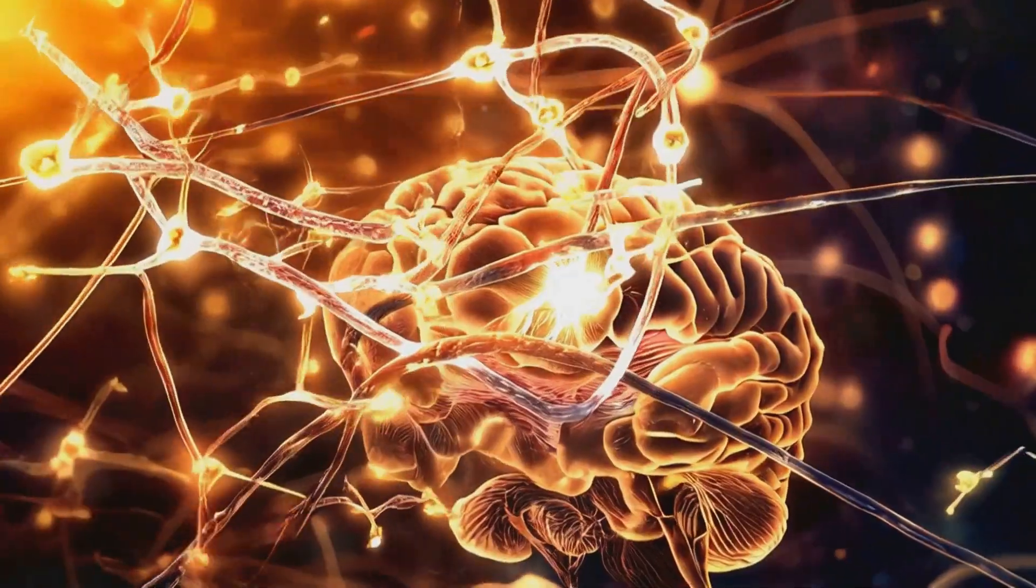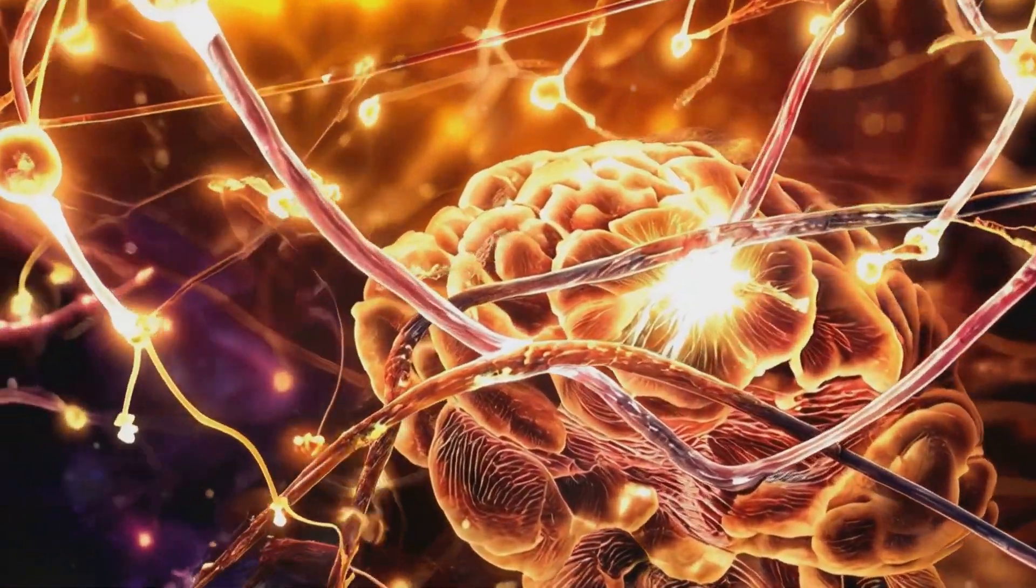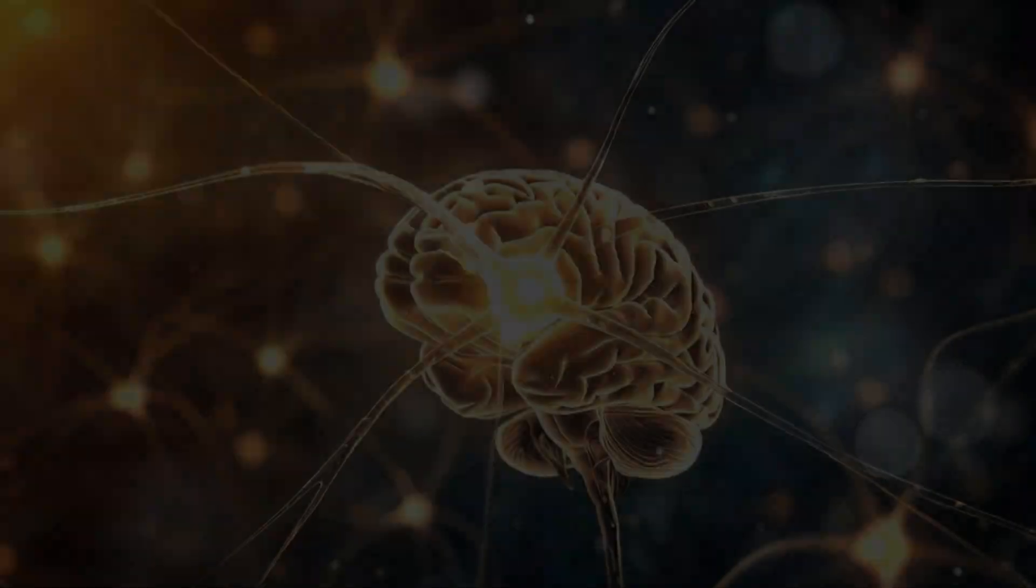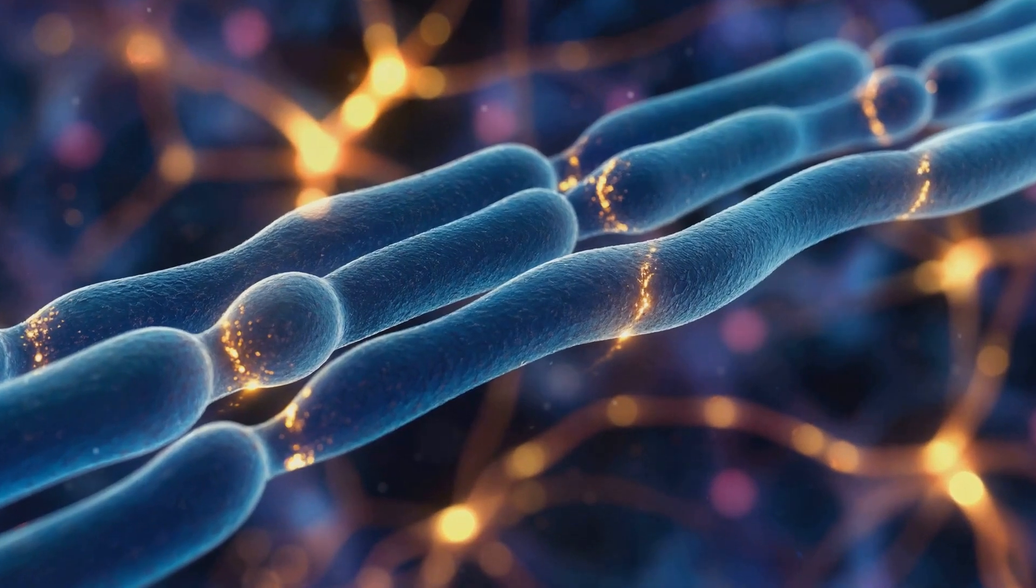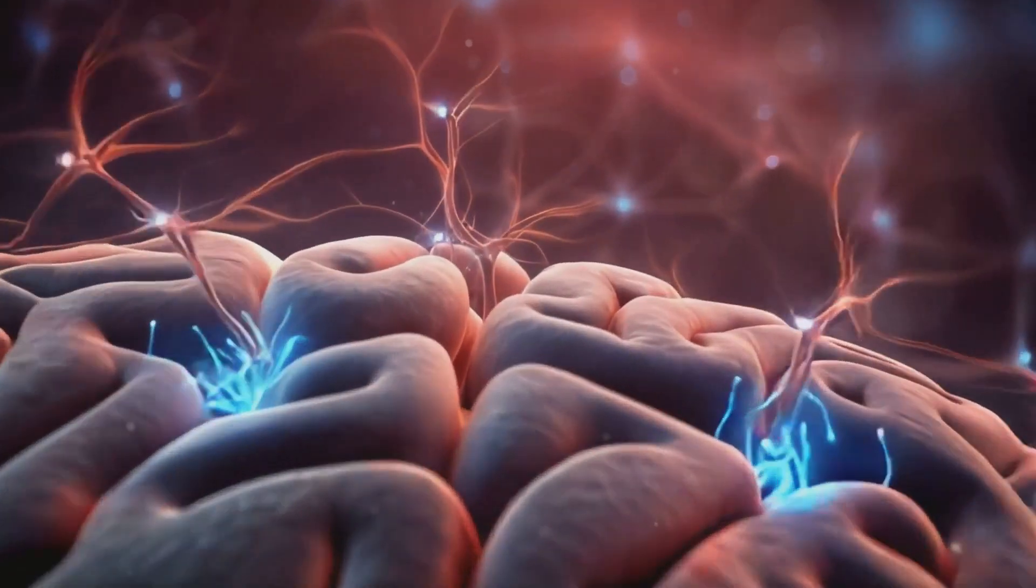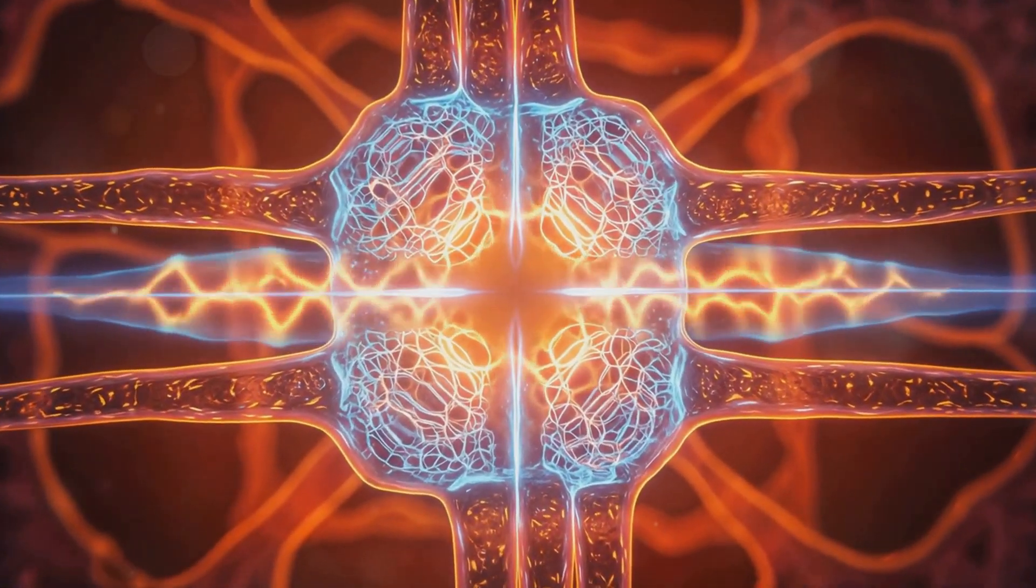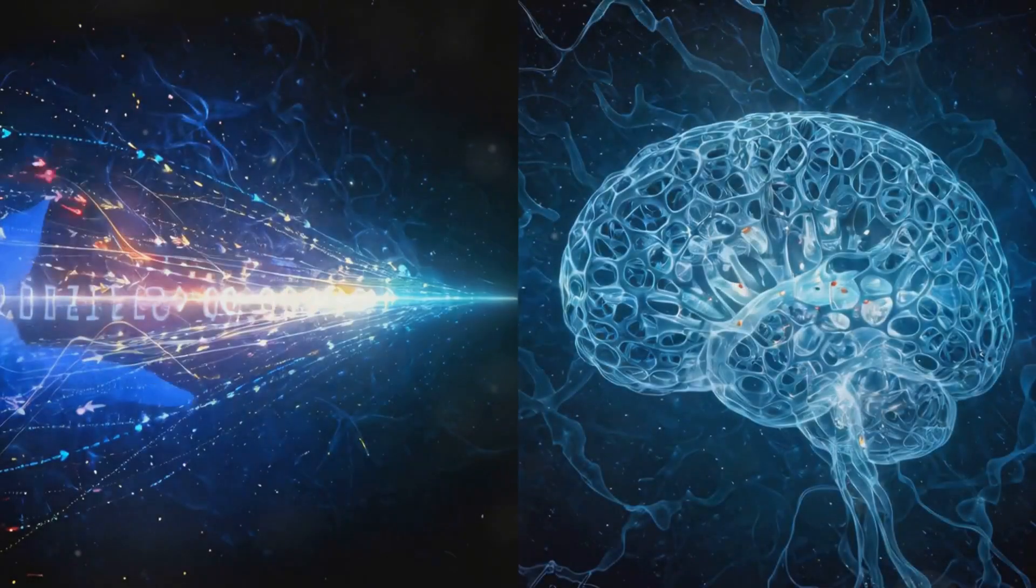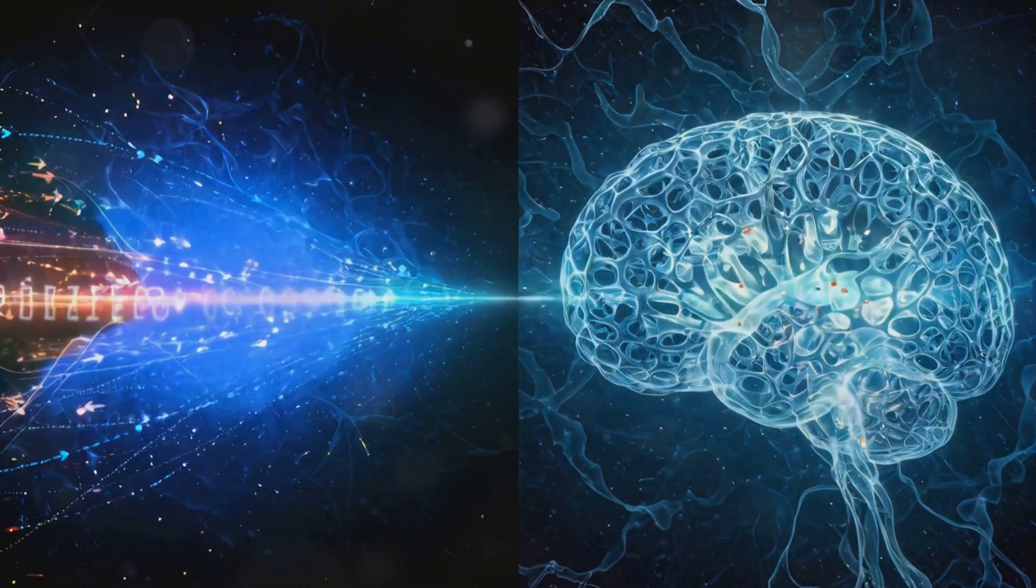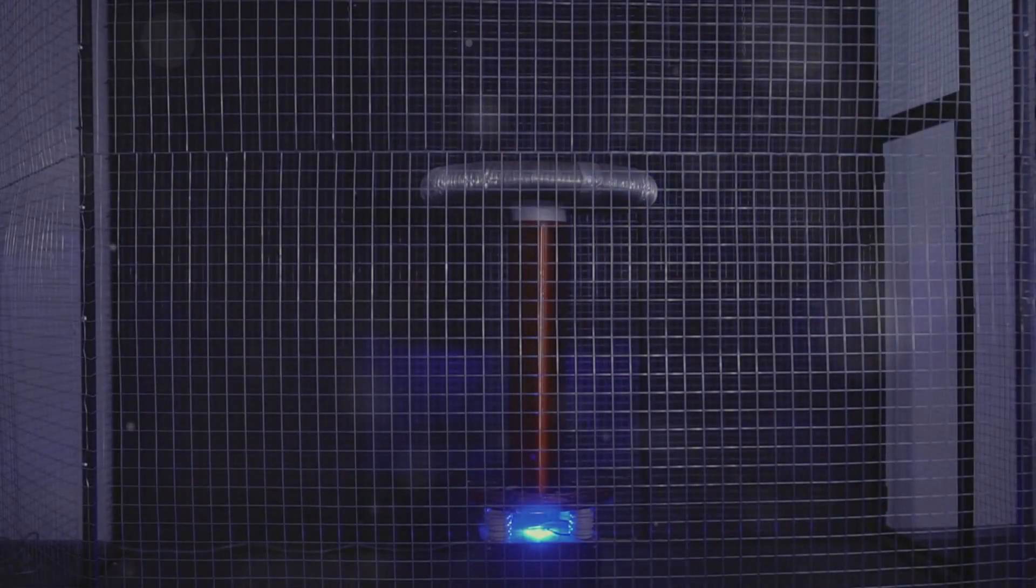Our brains, in a sense, are like finely tuned radios, capable of receiving specific frequencies from the Universe's symphony. Within our neurons, tiny structures called microtubules act as quantum receivers. These microtubules are composed of protein structures that vibrate and resonate at specific frequencies. Imagine them as miniature Tesla coils, capable of picking up on the subtle electromagnetic signals emanating from the quantum realm.